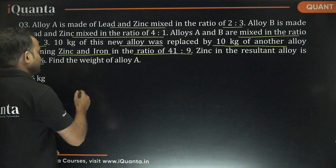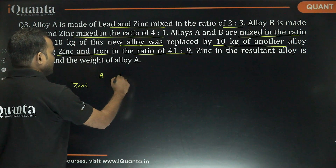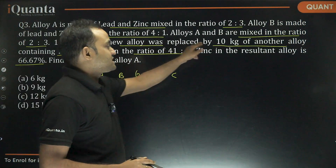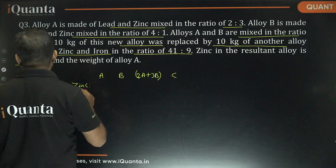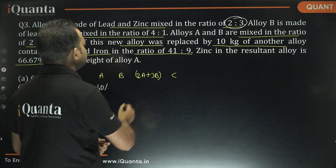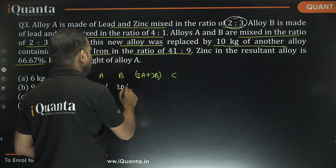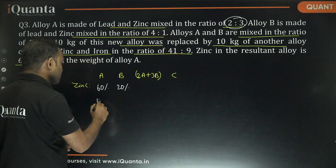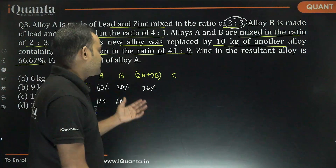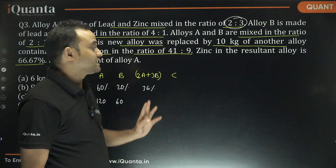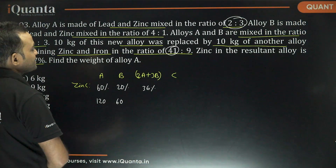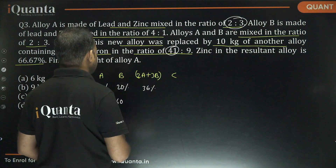Zinc in alloy A: ratio 2 to 3 means 3 out of 5, so 60%. In alloy B: 1 out of 5, so 20%. Mixing them in ratio 2A to 3B: zinc contribution is 2×60 plus 3×20 equals 180, divided by 5 gives 36%. So the combined alloy (A+B) has 36% zinc. In alloy C, zinc to iron is 41 to 9, so zinc is 41 out of 50, which is 82%.